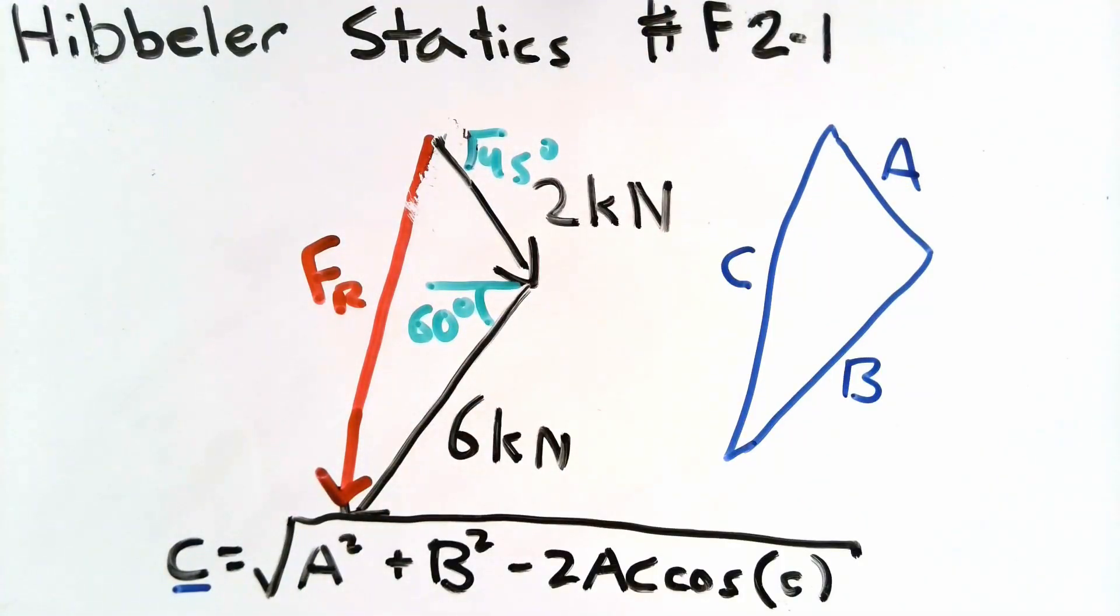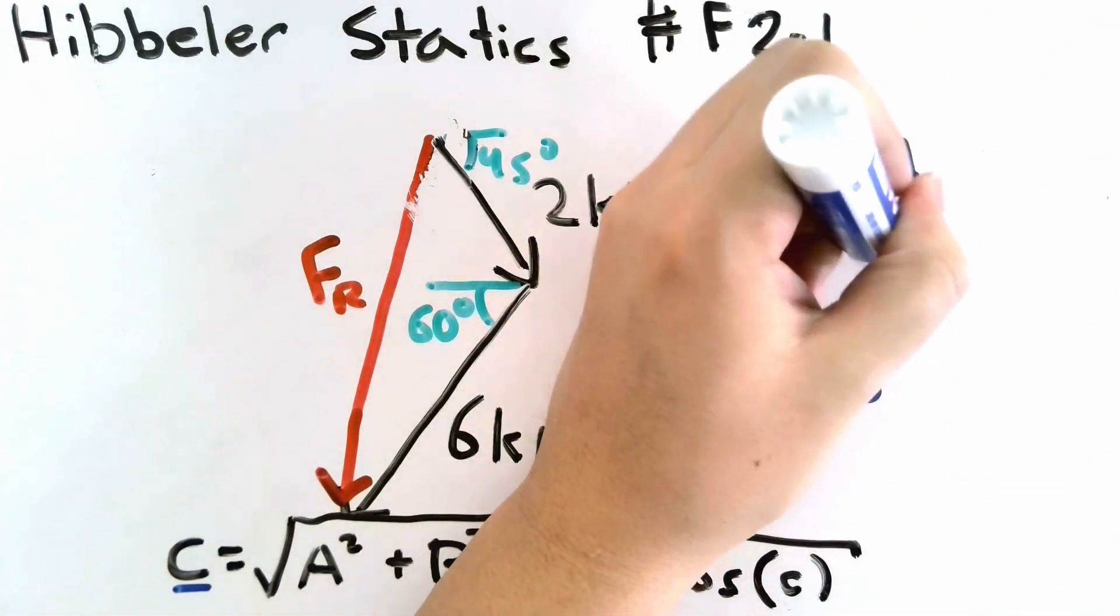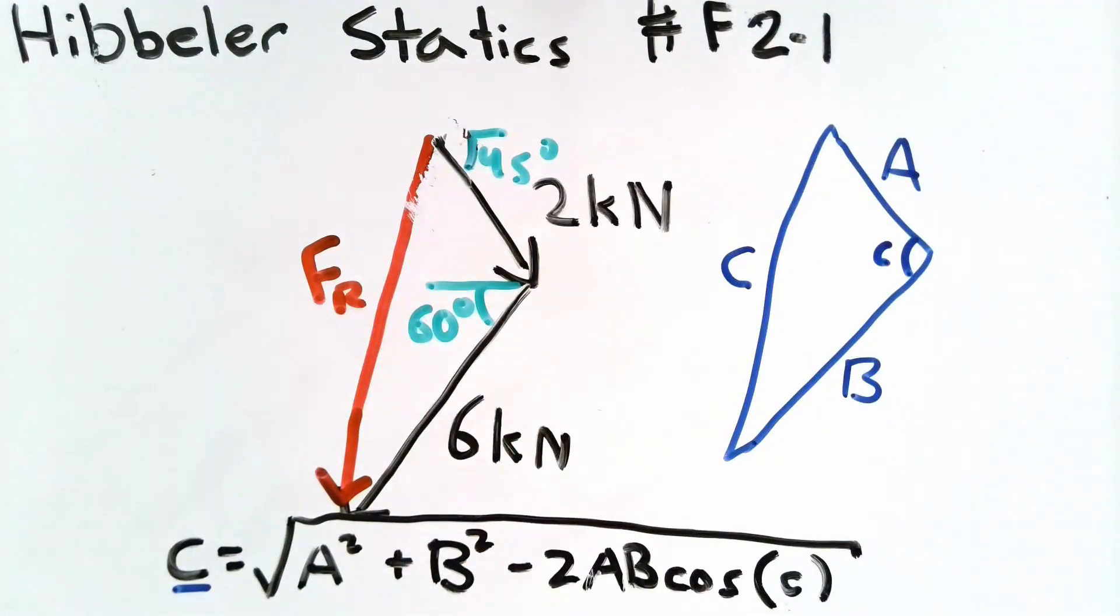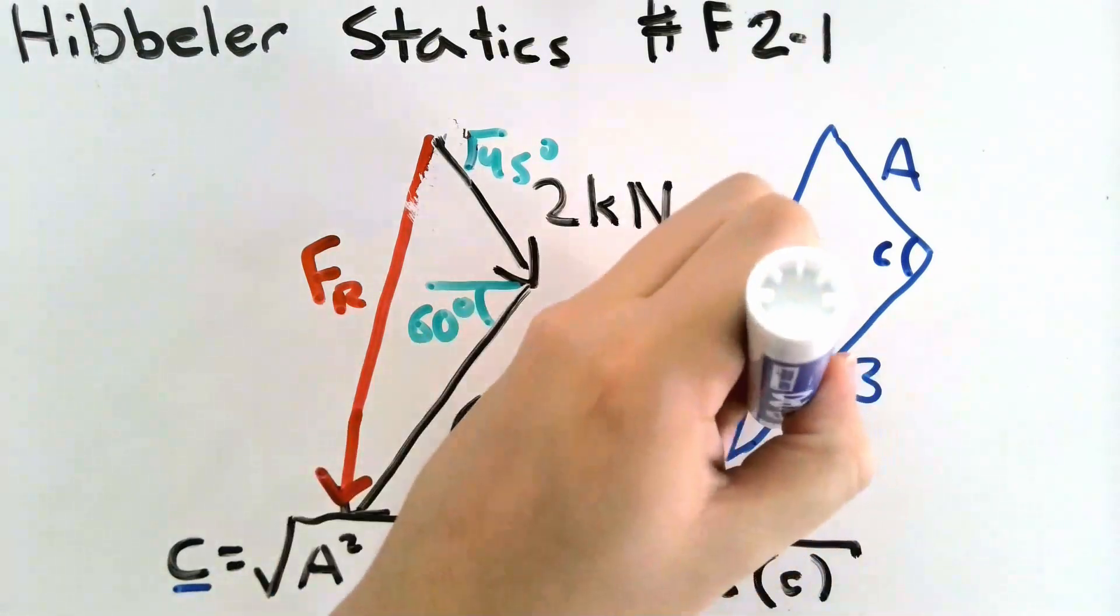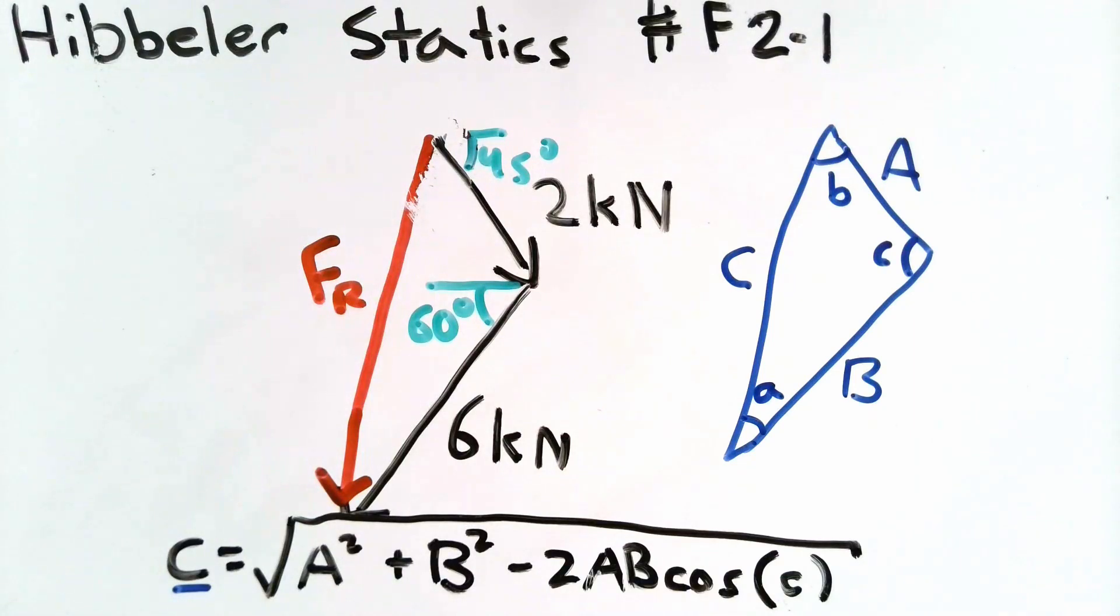So I'm calling these two sides A and B. Now when it comes to the corresponding angle C, that corresponding angle will be the angle opposite to your unknown side. In this case my unknown side is C, so the corresponding angle will be the angle opposite C. And then if you want a little bit more review, these would be my angles A and B respectively.